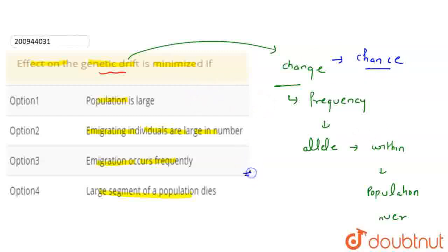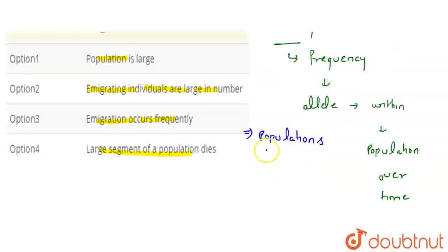Now, genetic drift occurs in all populations. This is a phenomenon of all populations of no infinite size.